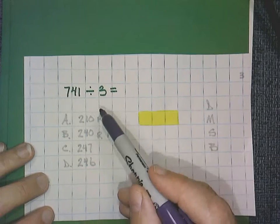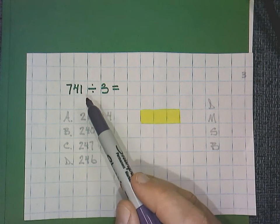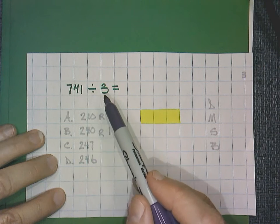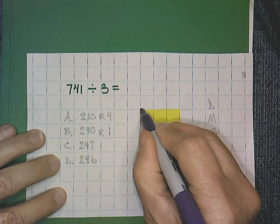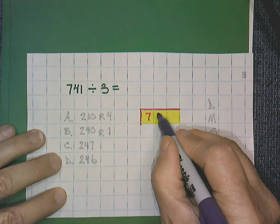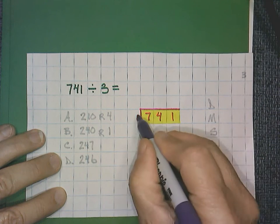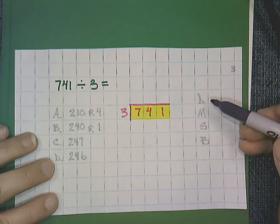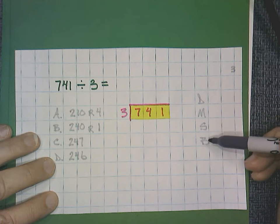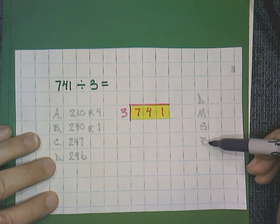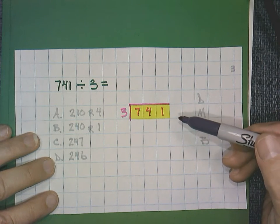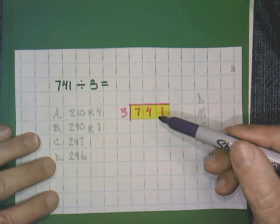This is right from a state test. Sometimes there's not a lot of words, right? It's just a problem. 741 divided by 3. I'm going to rewrite the problem. This time, I'm just going to use a more traditional DMSB, or in other words, divide, multiply, subtract, and bring down strategy. But remember, we're still using similar strategies as using multiplication to solve division.